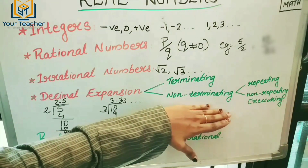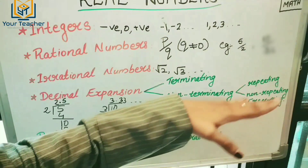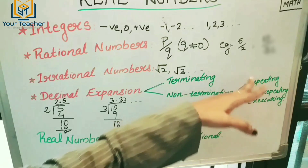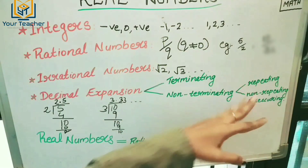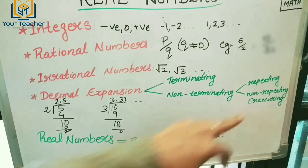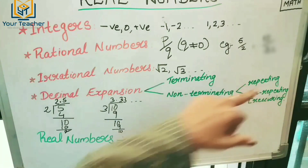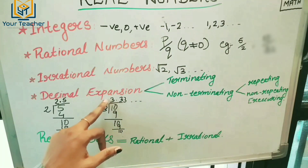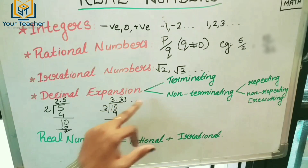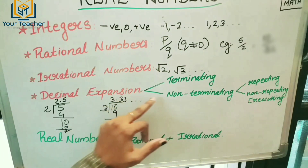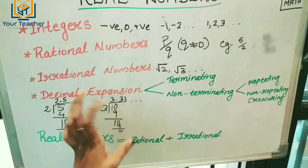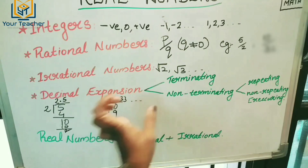Non-Terminating is again divided into two types: Repeating and Non-Repeating. Repeating means the decimal digits repeat. Like this — 3.333 — it repeats at every decimal place and continues.